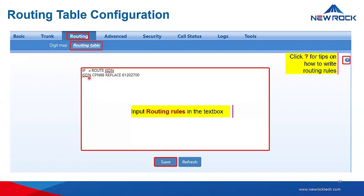Another method uses source, number, and a replacement method. For example, the source is ISDN and the calling party number starts with prefix 88, which will be replaced with 61202700. The replace number follows the replace keyword — this is the source number replacement method. We support 500 routing rules for the trunking gateway. Save the routing table.